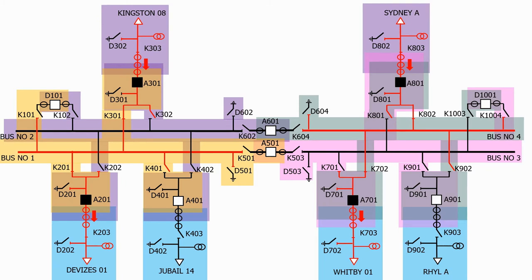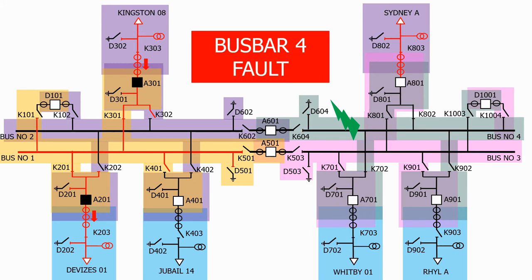Let's now add a fault on buzz bar number 4. Which protection zone will detect the fault? As we can see the fault is within the protection zone for buzz bar number 4. The buzz bar protection system operates, tripping all of the circuit breakers connected to the faulted buzz bar. We've now cleared the fault from the system.